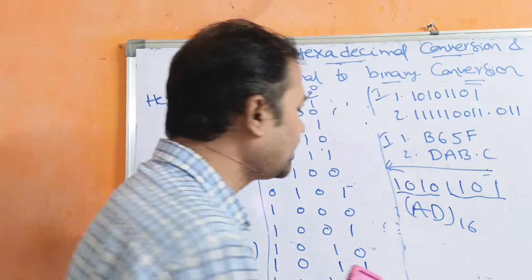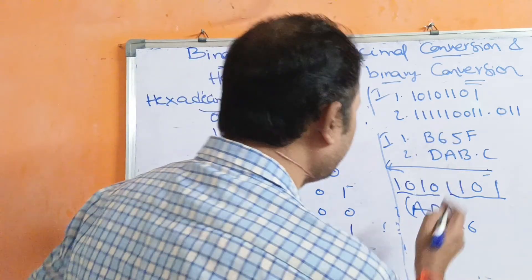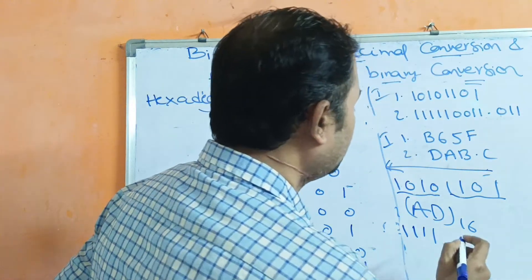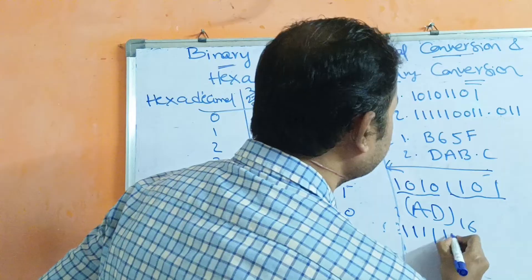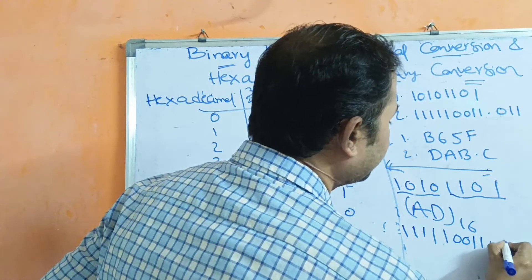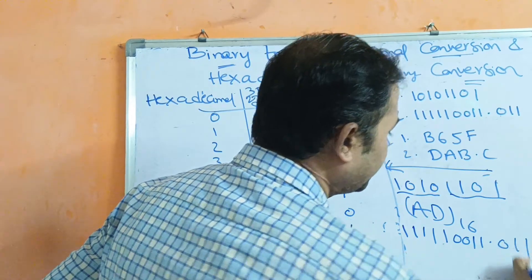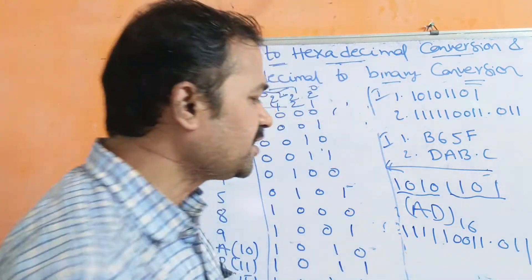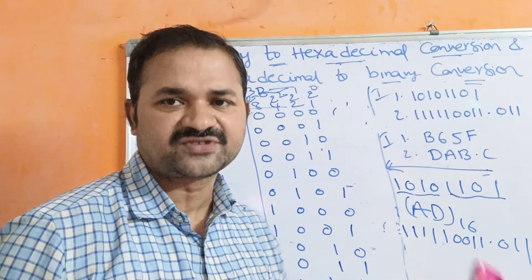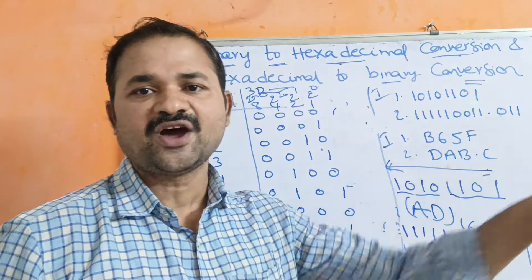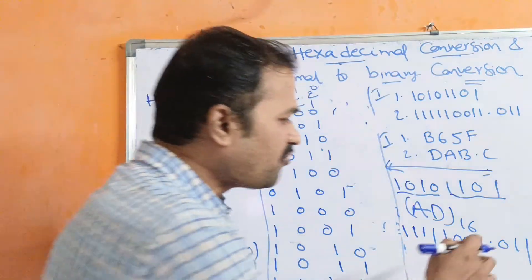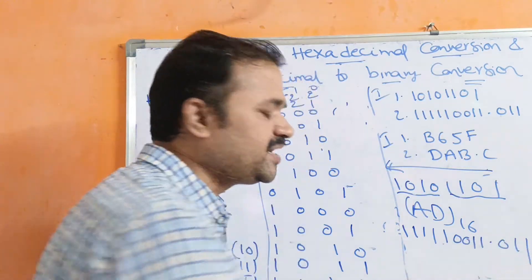Now let us solve the second example: 1 1 1 1 0 0 1 1 dot 0 1 1. Here, before the decimal point we have some bits, and after the decimal point we have some bits. After the decimal point, we group the bits from left to right.